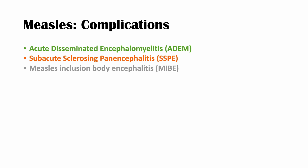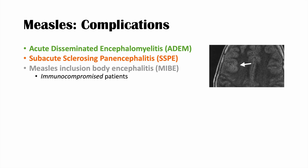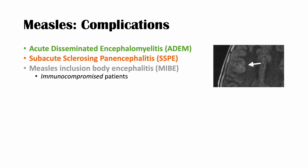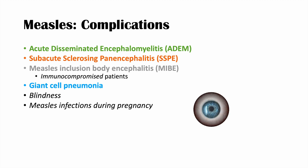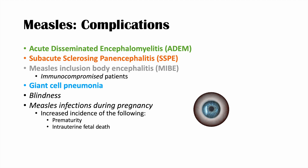Other complications include measles inclusion body encephalitis or MIBE, another type of encephalitis that occurs in immunocompromised patients where inclusion bodies are visible in the brain. Giant cell pneumonia can also occur. Measles infections can cause blindness. During pregnancy, measles is associated with an increased incidence of prematurity, intrauterine fetal death, spontaneous abortion, and low birth weight.